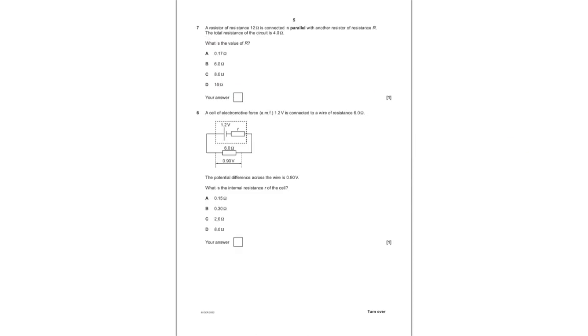For question number seven, we have a resistor of resistance 12 ohms which is connected in parallel with another resistance R. The total resistance of the circuit is 4 ohms. What is the value of R? That's a really simple question. 1 over 4 is equal to 1 over 12 plus 1 over R. If you just rearrange it to make R the subject, we end up getting 6 ohms. So B is the answer.